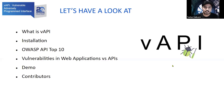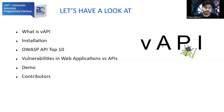We'll be looking at what exactly VAPI is, how to install it, the OWASP API top 10 project on which it is based, and then vulnerabilities in web applications versus vulnerabilities in APIs. We're also going to look at a quick demo of VAPI and see the contributors to this project.